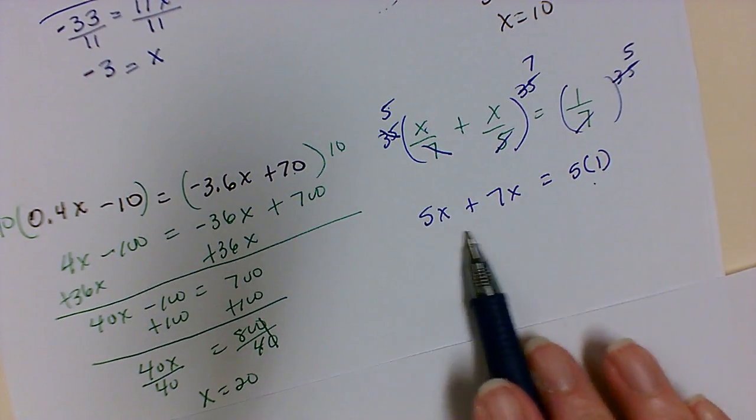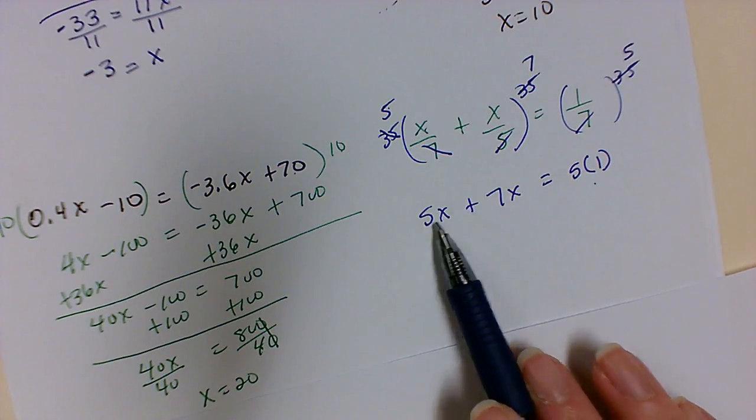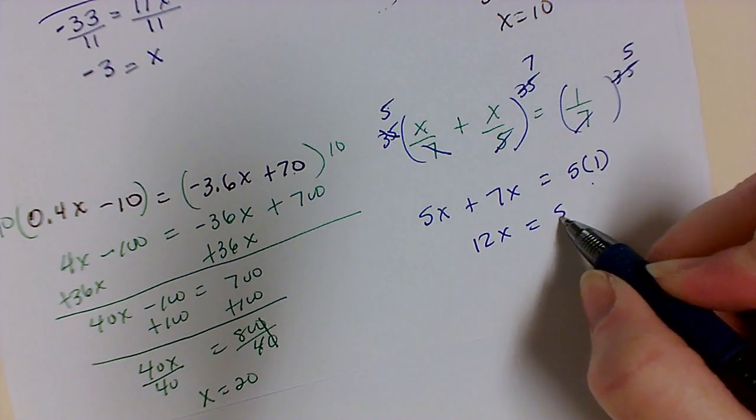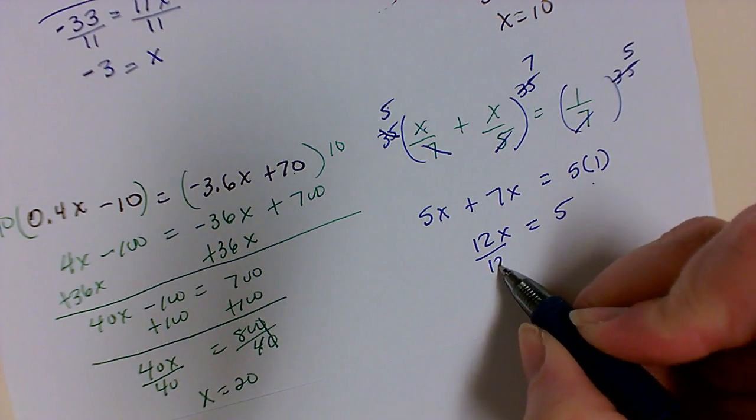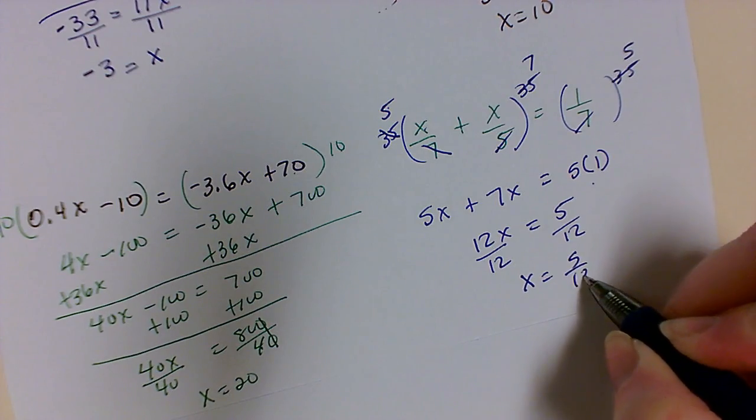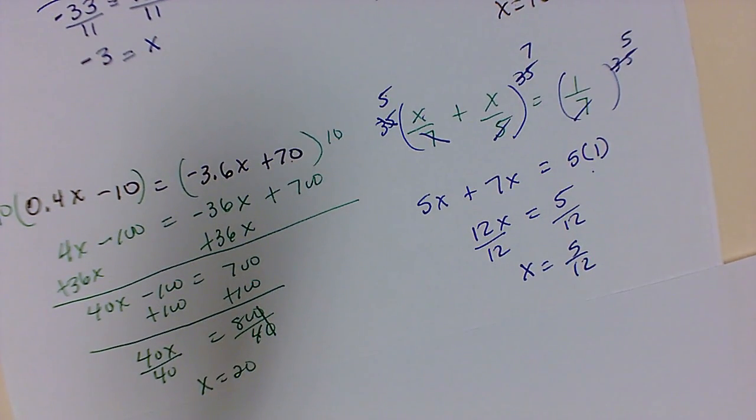So over here, I want to combine like terms. It's adding. Everything's positive. So 5 plus 7 will get me 12x is equal to 5. I'm going to divide by 12 on both sides. And x will equal 5 over 12. This will not reduce. There's nothing in common. So 5/12 will be our answer.